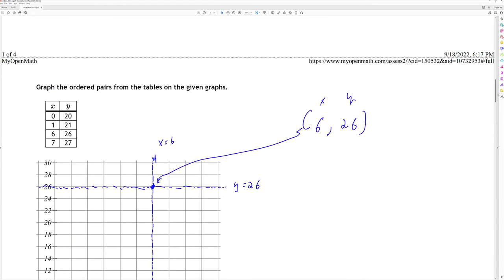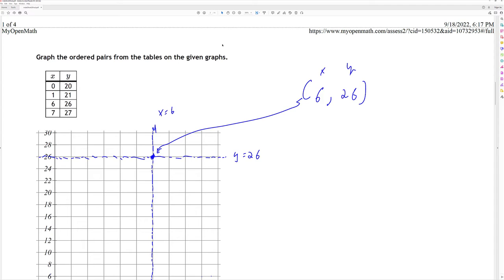For this one, they want us to find the ordered pair. So I have my ordered pair: the x-coordinate and the y-coordinate. This represents a set of points that have x-coordinate 6. This one here along the y represents the y-coordinate where y is 26 and where they cross. It's the ordered pair 6, 26.